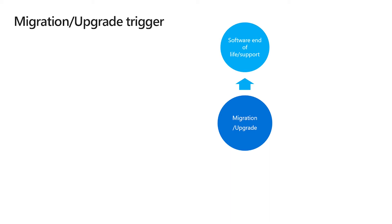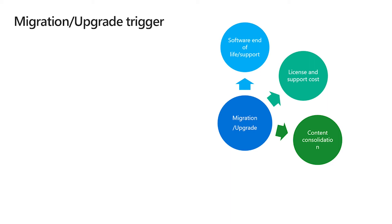So why migrate, and what are the triggers? End of life is one of the key things — especially after an acquisition, the new company might not invest further, and current versions are coming to end of life. Second is license and support costs; some systems are not cheap. When you already have Microsoft 365 in your environment, the question becomes: do I need to spend twice the money keeping data elsewhere and in SharePoint, or can I consolidate everything into one place?